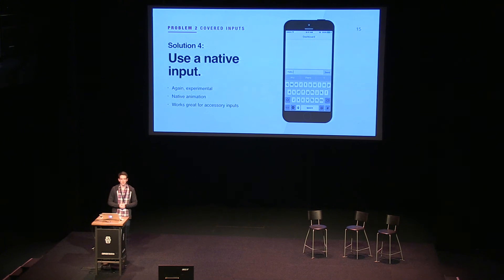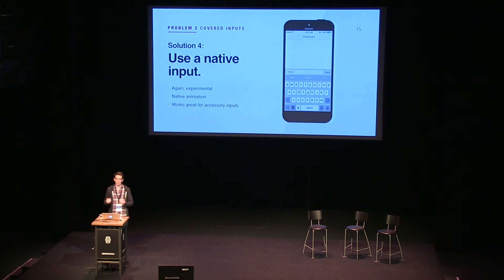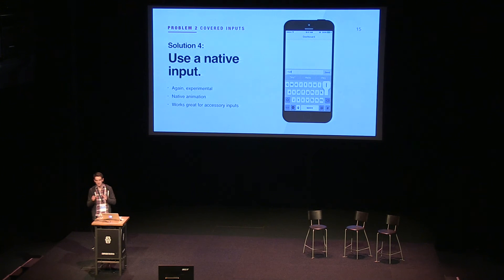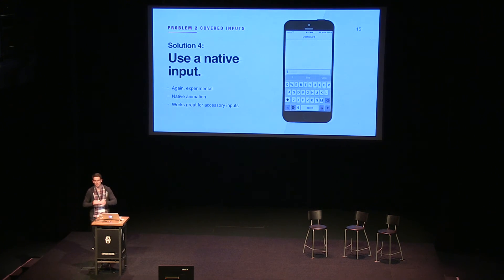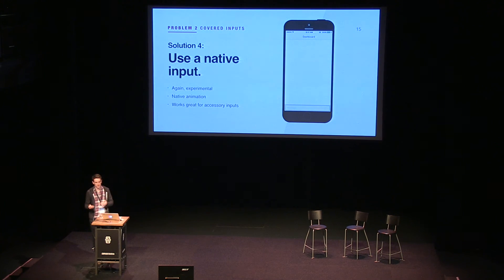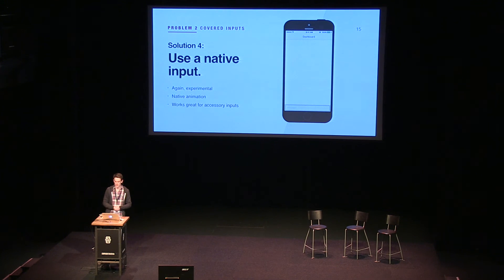Similar to the accessory bar solution, another option is to use a native input. Eddy Verbruggen has a really cool plugin — not officially released yet — but it has some really awesome promise. It allows you to have a native input that rides on top of the keyboard, and anything entered in that native text field can be passed back to JavaScript. This is awesome for solving the animation sync issue because you get the native animation that goes along with the native text input. This approach is still somewhat experimental with some edge cases, but for a chat-style application, it's a really good use of native components.